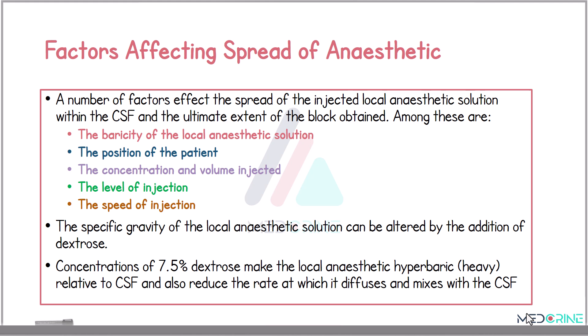The spread of spinal anesthesia depends on several factors: baricity, the position of the patient, the concentration and volume injected, the level of injection, and the speed of injection. The specific gravity of a local anesthetic can be altered through the addition of dextrose. A concentration of 7.5% dextrose makes a local anesthetic hyperbaric in nature, heavier than the cerebrospinal fluid, and this also reduces the rate at which it diffuses and mixes with the cerebrospinal fluid.